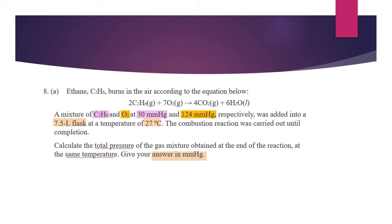C2H6 burns in the air according to the equation below. A mixture of C2H6 and O2 at 30 mmHg and 124 mmHg respectively was added into a 7.5 litre flask at a temperature of 27 degrees Celsius. The combustion reaction was carried out until completion. Calculate the total pressure of the gas mixture obtained at the end of the reaction at the same temperature and give your answer in mmHg.